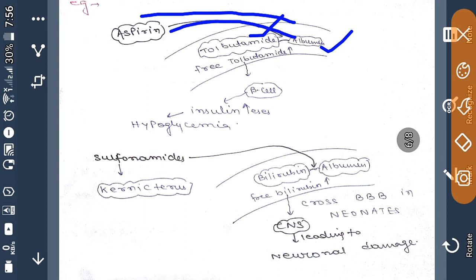If albumin is bound to tolbutamide, then aspirin will displace some of the tolbutamide and then that tolbutamide will be evaluated as free tolbutamide. Then it will cross the vessel and will stimulate beta cells, which will increase insulin amount, and that can cause hypoglycemia.